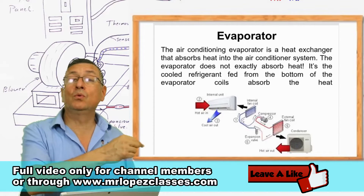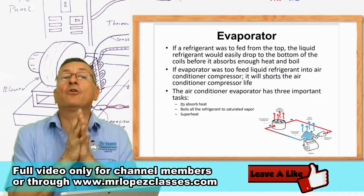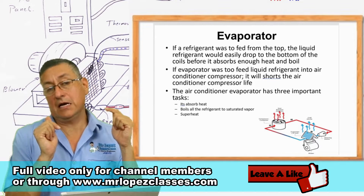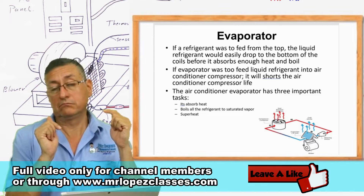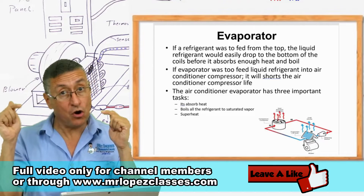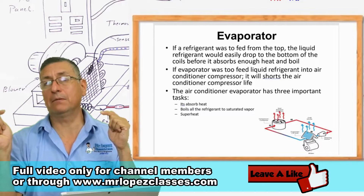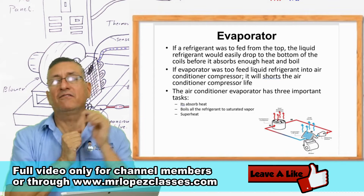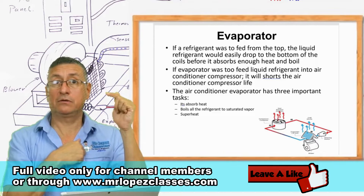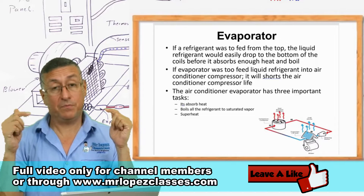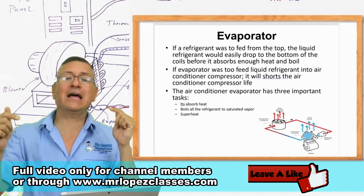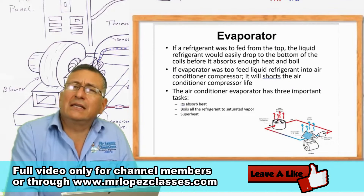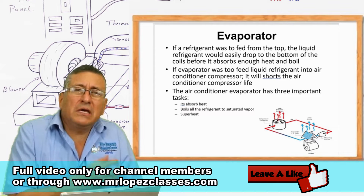Keep in mind the boiling point of the refrigerant is minus 22 degrees Fahrenheit. The compressor receives refrigerant vapor at low pressure on the input side, and on the output side produces supersaturated vapor at high pressure and high temperature. In other words, in the compressor you have vapor on both sides — low pressure and high temperature in, high pressure and high temperature out.